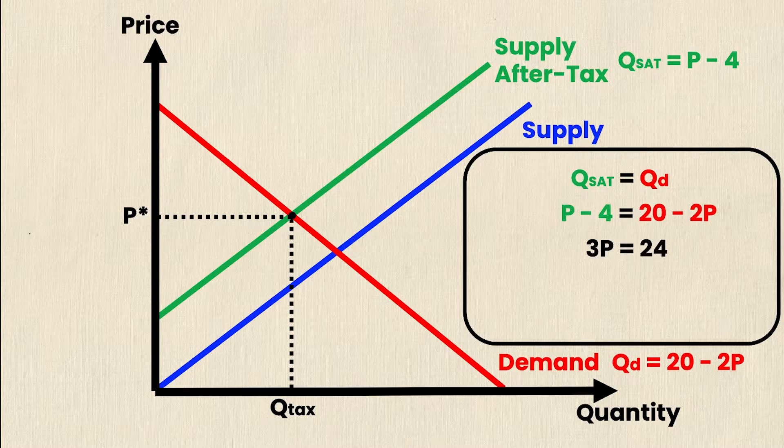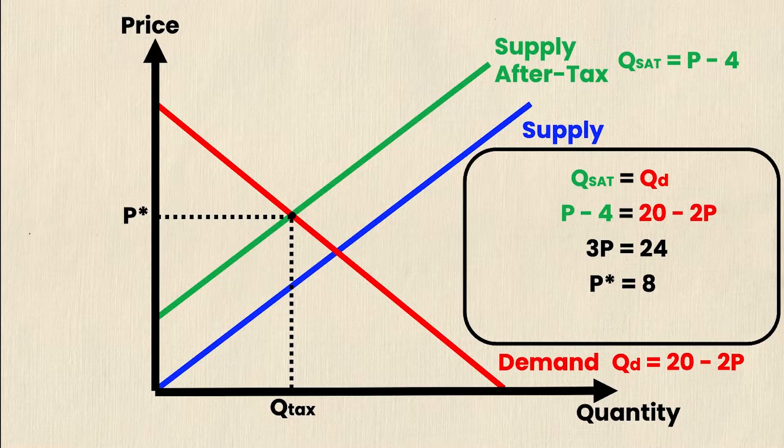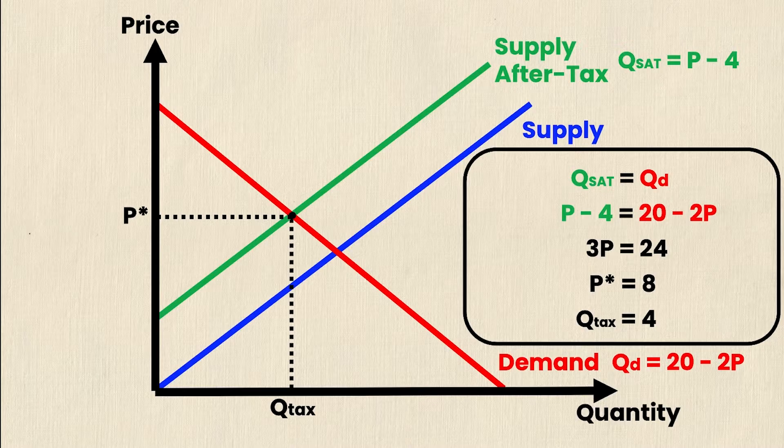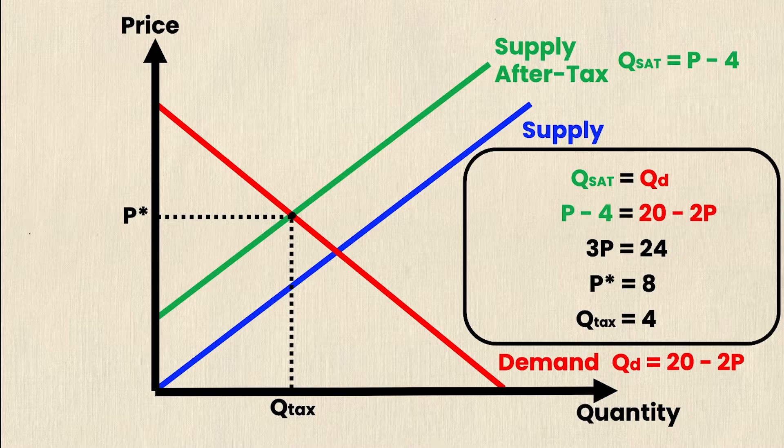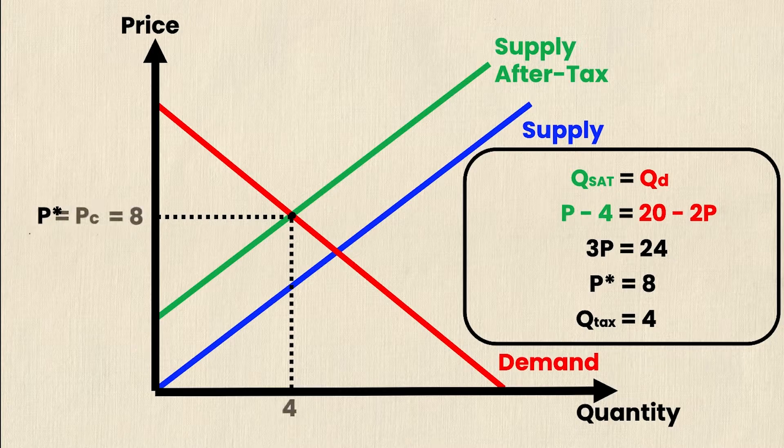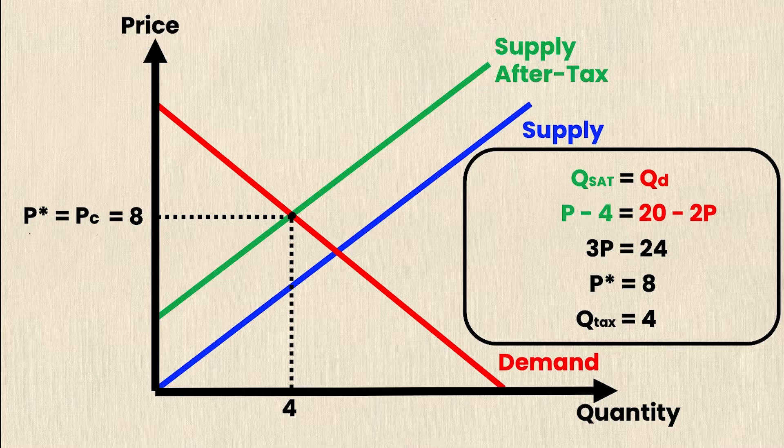Simplifying further, I get 3p is equal to 24. And then finally, p star is equal to 8 and q tax must be equal to 4. And once again, I can get that by plugging in p equals 8 into either the qsat or the qd equations, they'll both give me a q tax of 4. So now I can take my known values and sub them in. So 8 and 4 are my new equilibrium values. So I know that p star is equal to the price that consumers pay for the good, which is $8. And I know that the quantity in equilibrium is going to be equal to 4 as per all of the calculations on the right.